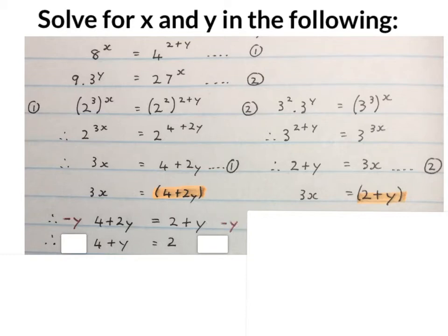We end up with 4 plus Y equals 2. We still got to get Y alone, so we minus 4 on both sides. We get Y equals -2. Now we have the Y value of this simultaneous equation. Now we take this Y and plug it back into one of these easier ones. I'm going to take Y is -2 and plug it in the place of that Y.